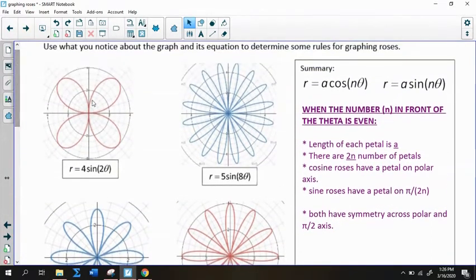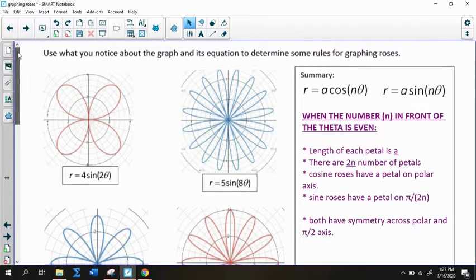So for instance, n here is 2, pi divided by 2 times 2 is 4. So there's a petal on the pi over 4. And this one's a little bit harder to tell, but this would be the petal would be on the pi over 16, which is this first petal right here in this spot. Both of the type, both sine and cosine roses here, when the n is even, have symmetry across both the polar and pi over 2 axis.